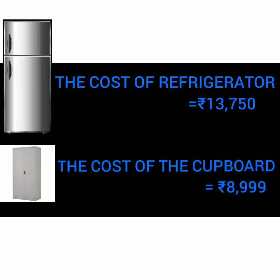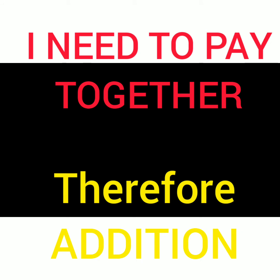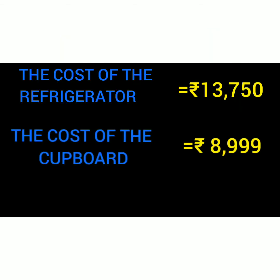How much must we pay the shopkeeper to buy both? I want to buy both the refrigerator and the cupboard, so I have to pay for both things — I have to put them together. It is addition. We will write: cost of the refrigerator is Rs. 13,750, and below that, cost of the cupboard is Rs. 8,999.